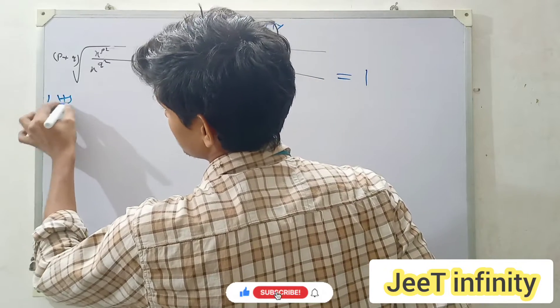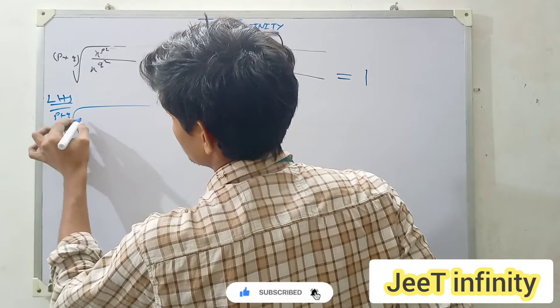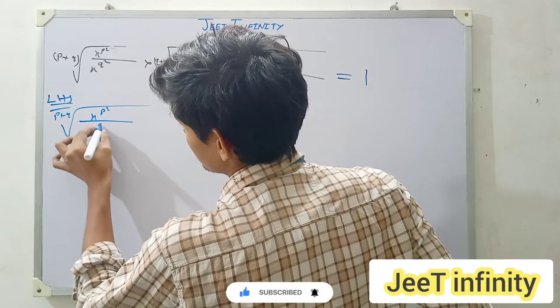First of all, you will write here LHS. LHS is equal to this quantity. You will write here: (p plus q) root, x to the power p over x to the power q.